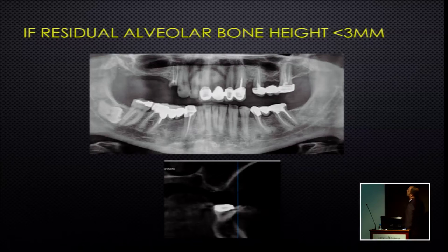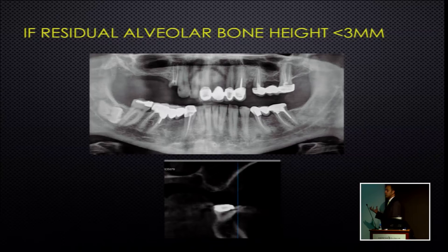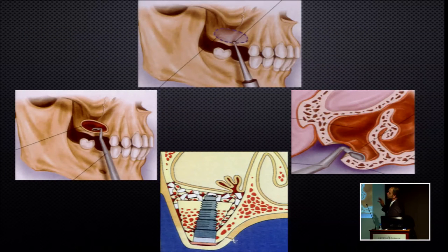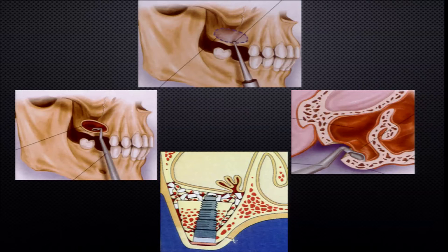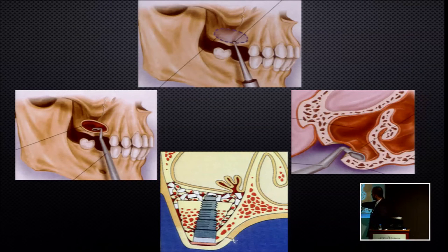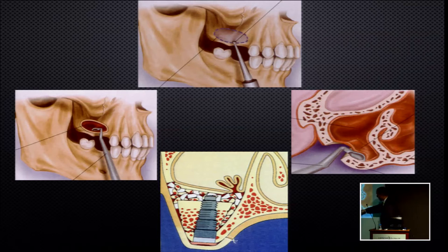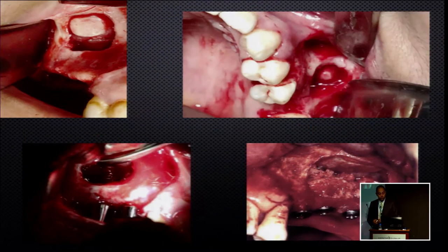The protocol states that if the posterior bone height is less than 3 mm, we cannot get initial stability for implants, and a staged procedure is required. We perform open sinus lifting with a lateral window on the posterior maxilla, use blunt freers to free the sinus membrane from the sinus bone, lift the entire maxillary sinus, place block or particulate bone graft through this window, then either insert the implant immediately if we can achieve initial stability, or graft it and postpone implant placement.